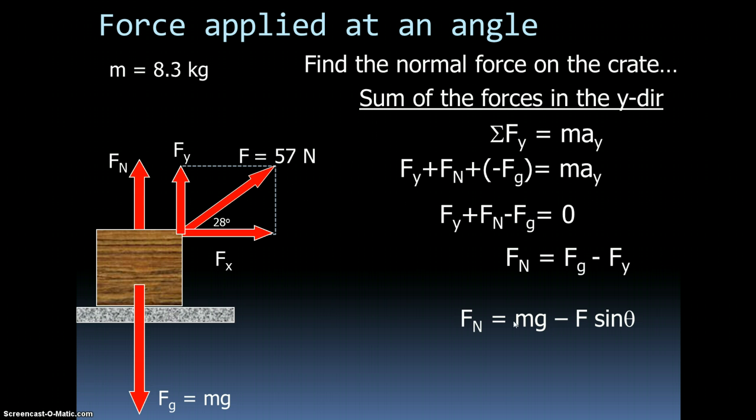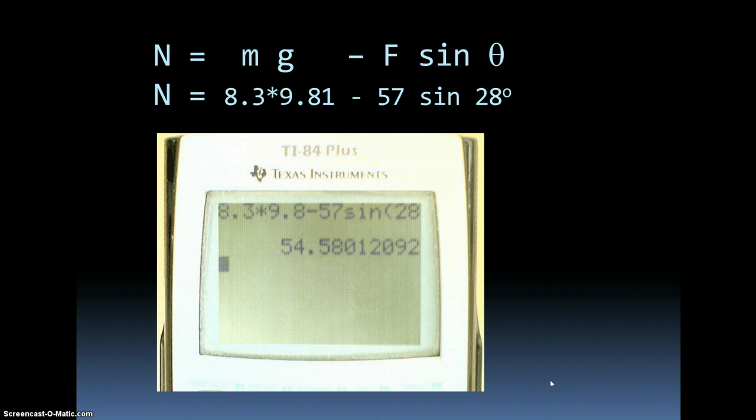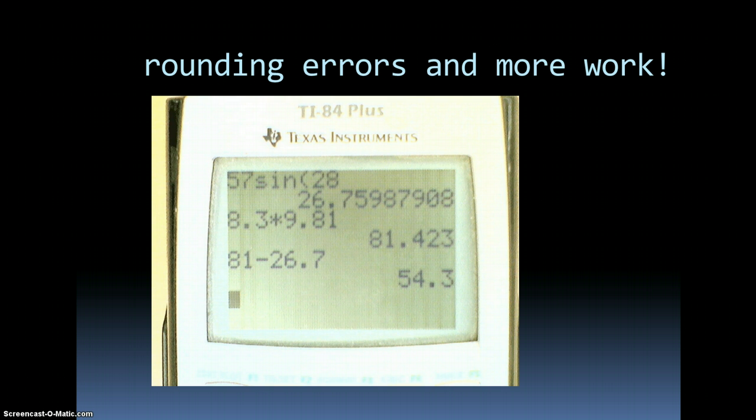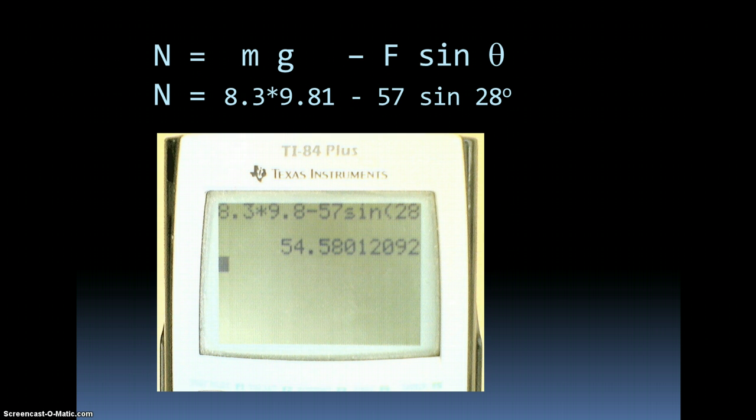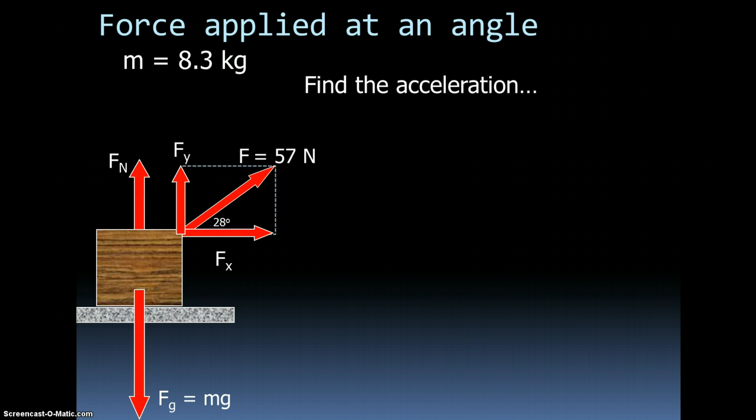Force normal is equal to mg minus f sine theta. And we know the value of all these variables. We plug it into our calculator. We get 54.6 newtons. Now, my recommendation is when you put this into your calculator, when you put in the normal force equal to mg f sine theta, that you do it all in one shot. Don't break it up into parts. If you break it up into parts, you're far more likely to make mistakes. You're probably going to get rounding errors. It ends up being more work. So it's far better to just put in all the calculations in one shot.